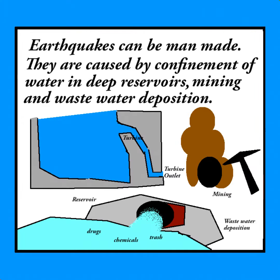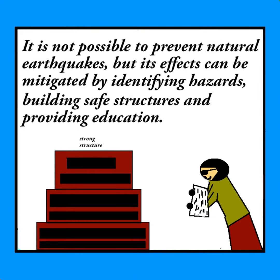Earthquakes can be man-made. They are caused by confinement of water in deep reservoirs, mining, and wastewater deposition. It is not possible to prevent natural earthquakes, but their effects can be mitigated by identifying hazards, building safe structures, and providing education.